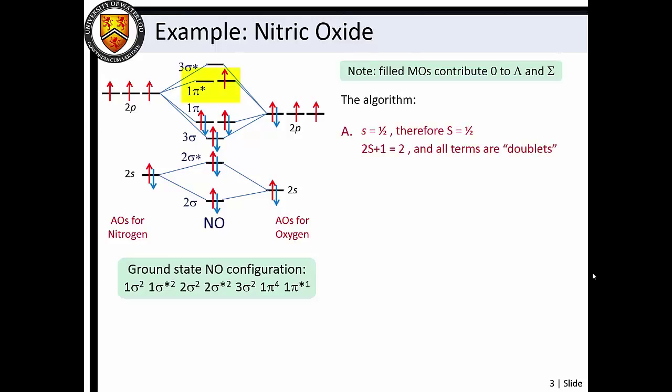Since we are only concerned with the valence 1 pi star electron, the system is described by a total spin angular momentum quantum number of 1 half. Thus we are expecting doublet terms. The orbital angular momentum quantum number is 1 for a pi electron, so the term must be a doublet pi.